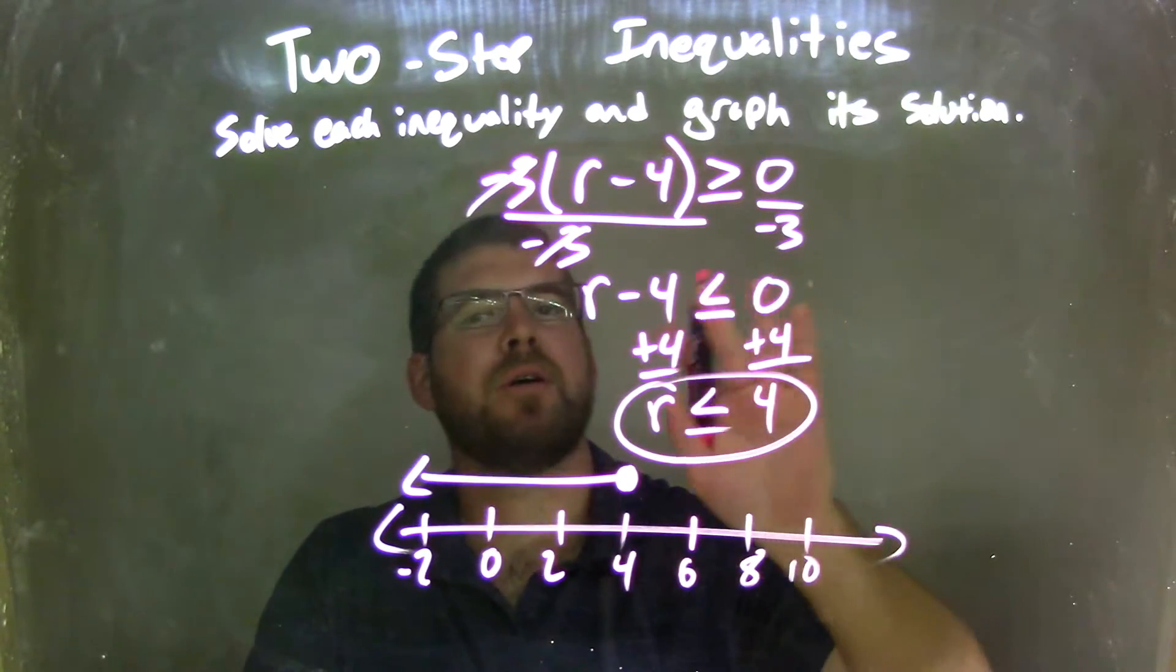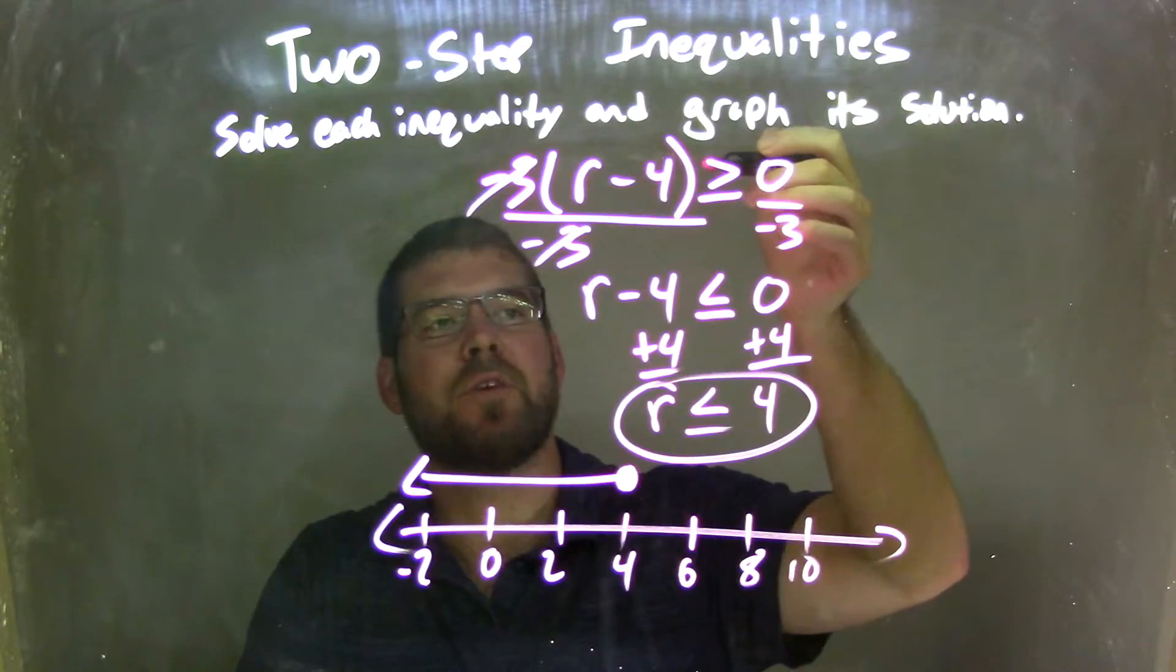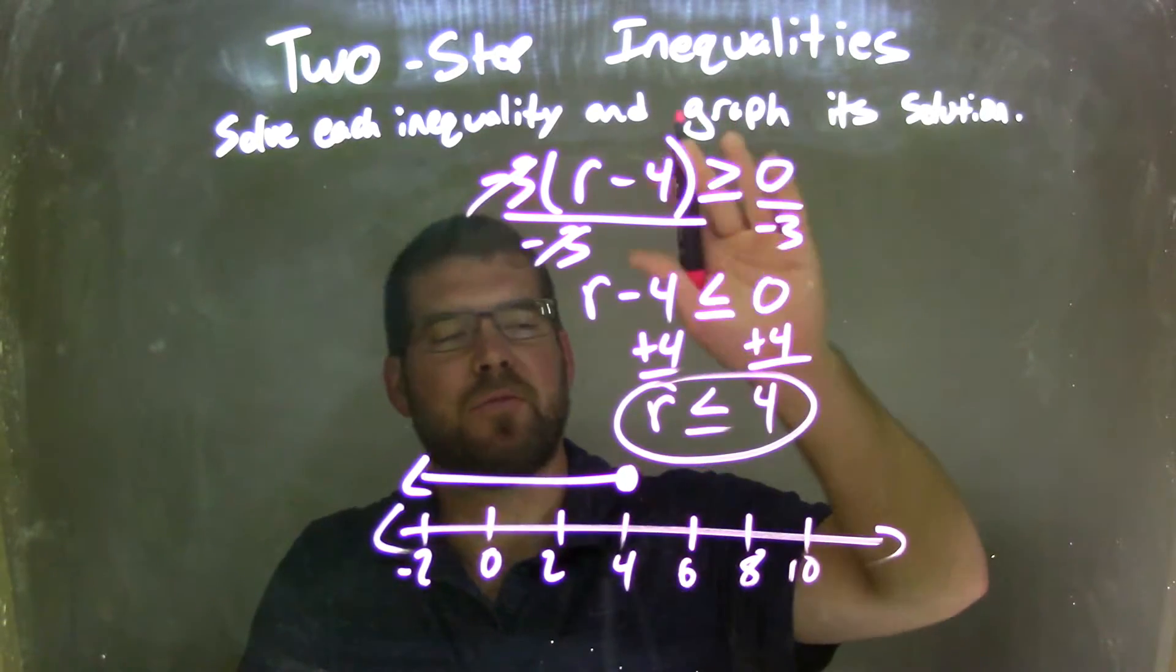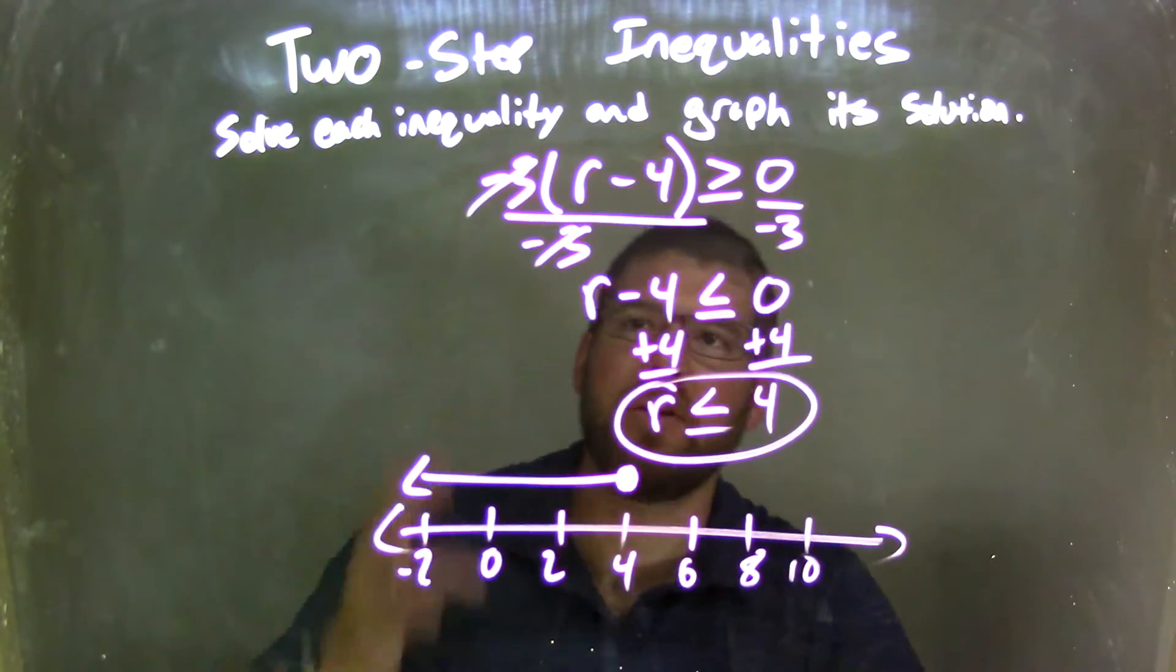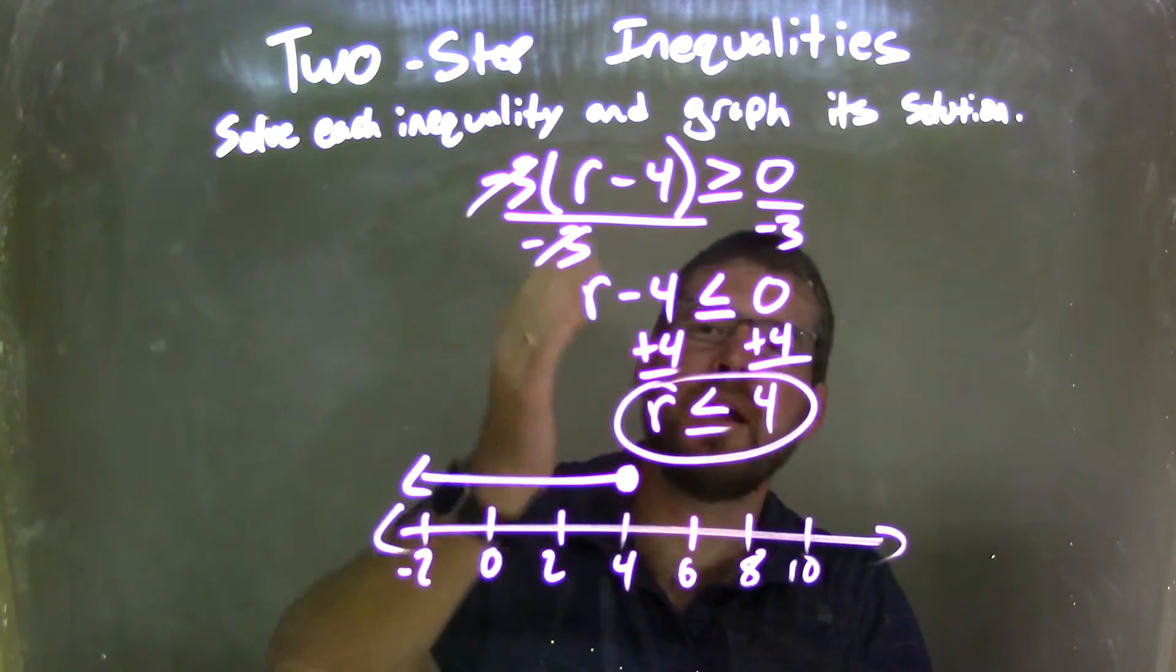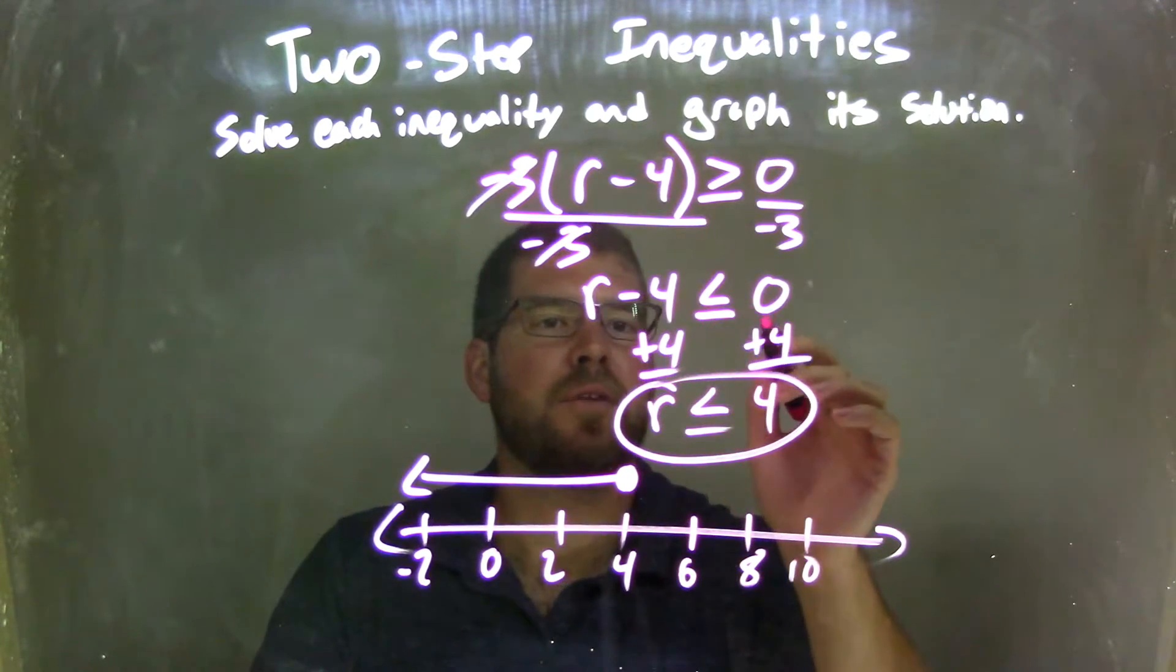But probably the most important part, the common mistake that I see, is you need to flip that inequality. When you go from a greater than or equal to sign to a less than or equal to sign, because when you divide by a negative over the inequality, you need to flip that sign. Now I'm left with r minus 4 is less than or equal to 0.